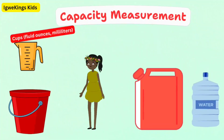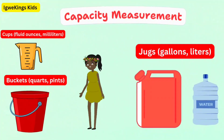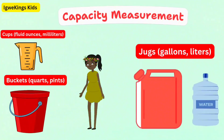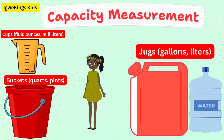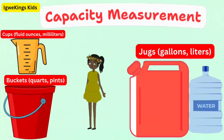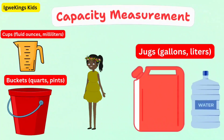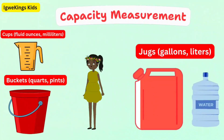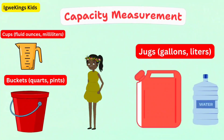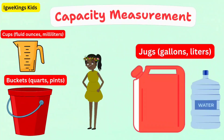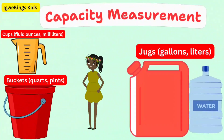Next, let's explore capacity. Can you help me measure the capacity of this water bottle? Capacity is how much something can hold. We can measure capacity using cups, fluid ounces, and milliliters — great for measuring liquids like water or juice.